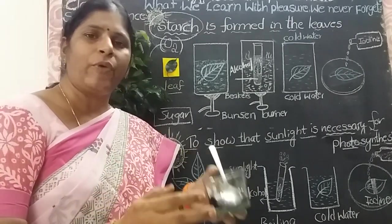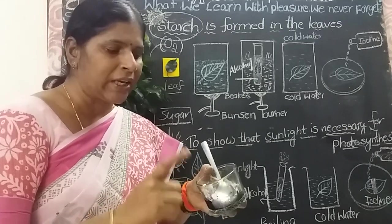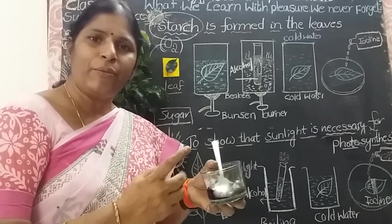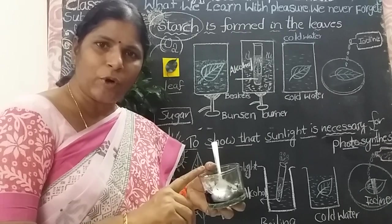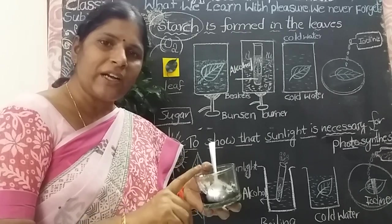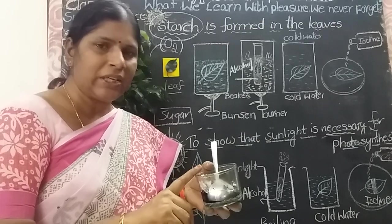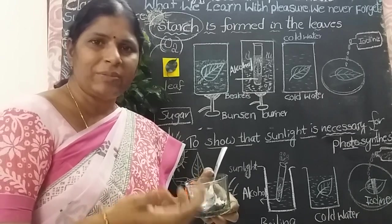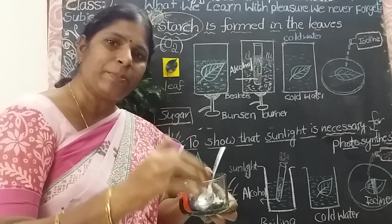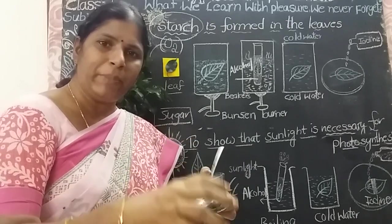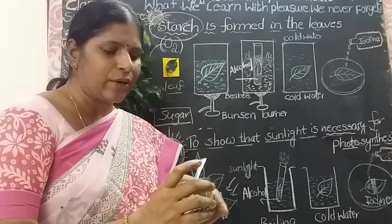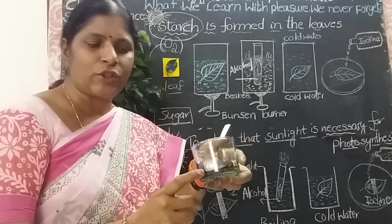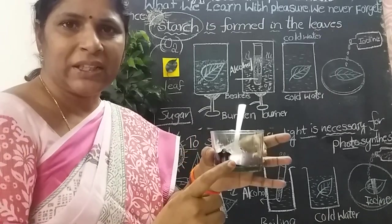Starch comes from plant products. Maize comes from the plant — it is a plant product. Starch is present in plant products. I take a maize powder and add a few drops of iodine solution. Immediately, that powder turns into bluish black. This experiment proves that starch is present in the corn flour. You too can do this at home — take a boiled potato, rice, bread, or any fruit.